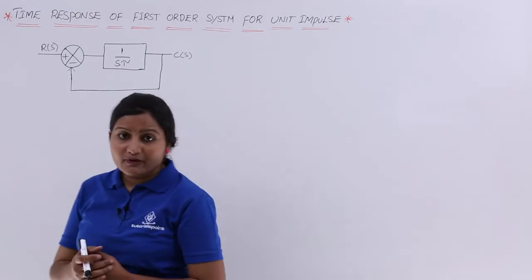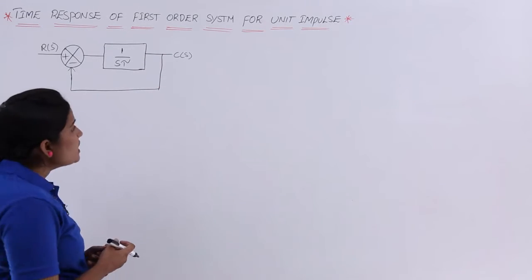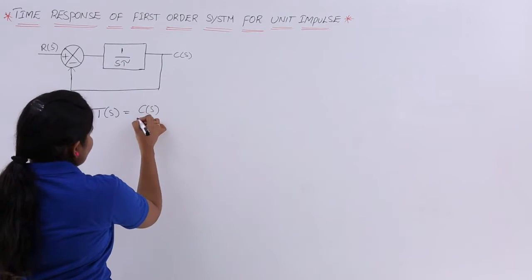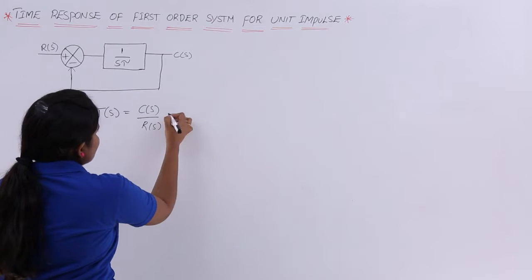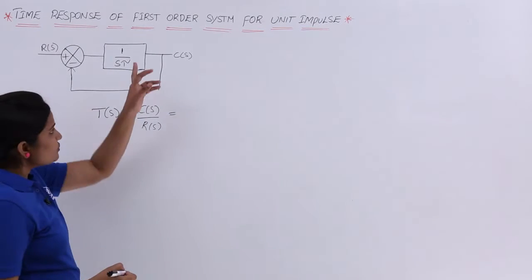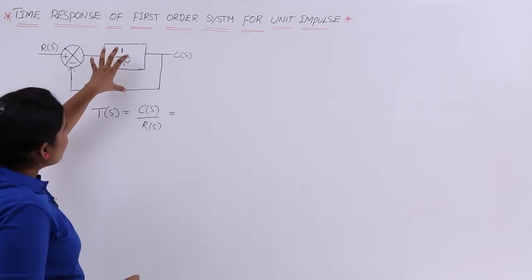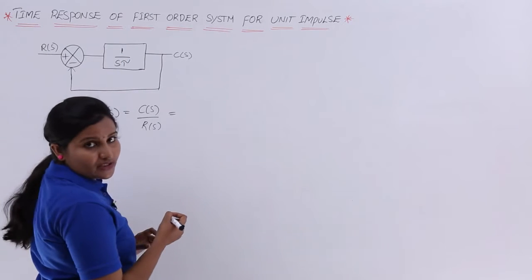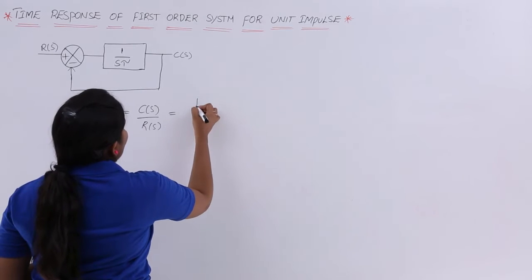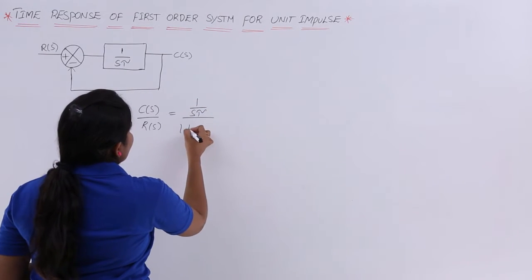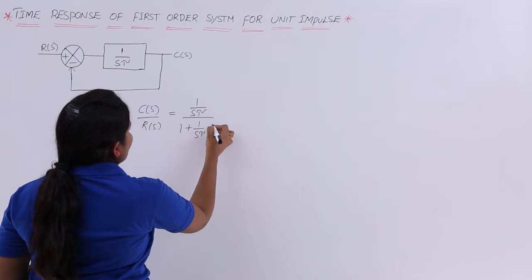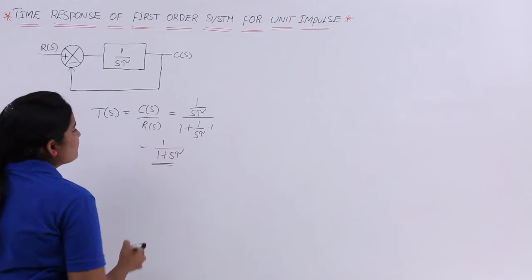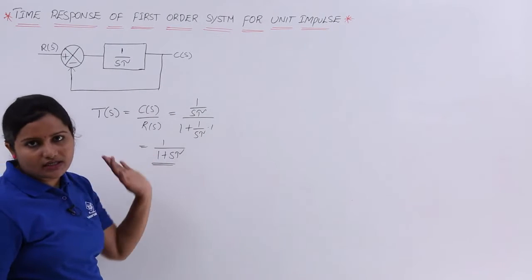Coming to this basic first order system block diagram, if you consider the transfer function T(s) is equivalent to C(s) by R(s), this is equivalent to — according to the negative feedback theory — G by (1 + GH). That means (1/sτ) divided by (1 + (1/sτ)·1), which simplifies to 1 by (1 + sτ). This is the transfer function of the first order system.